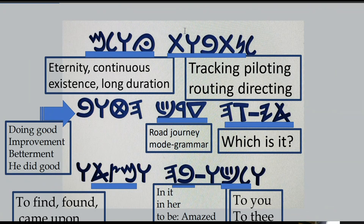He-Tet-Waw-Bet: I could find He-Tet-Bet-He in the dictionary, defined as doing good, improvement, betterment. Also He-Tet-Yod-Bet — he did good. The last line: Lamed-Kof is 'to you' or 'to thee,' and Bet-He is 'in her' or 'to be amazed, astonished.' Mem-Zadi-Aleph is defined as to find, found, came upon.